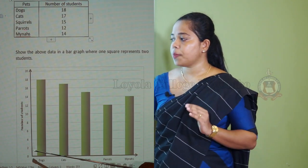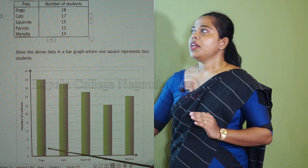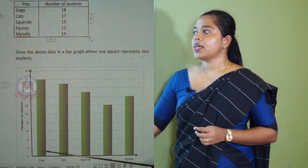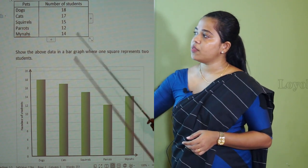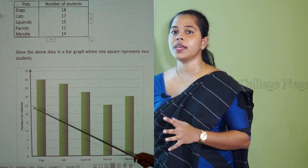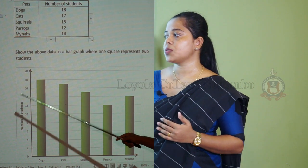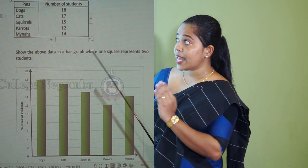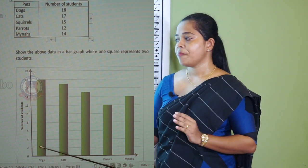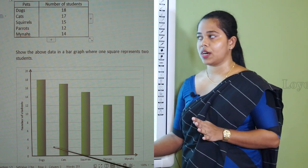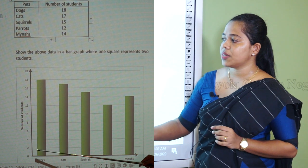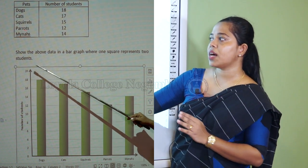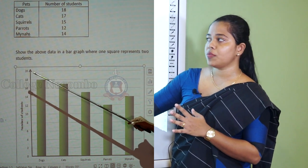The scaling in this graph is a little different from the first one, because the highest number is 18. If you represent one student from one square, to show 18 in your writing book you would have to draw a much longer bar upward, making your graph bigger and leaving insufficient space to name the axes and categories. So I have changed the scales — I have represented two students from one square. I have numbered the vertical axis 2 by 2: 0, 2, 4, 6, 8, 10, 12, 14, 16, 18, and one more, making it 20.